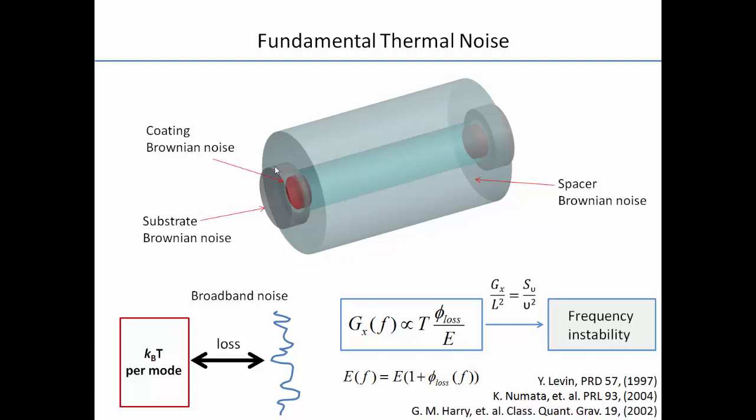The Brownian noise can be written as the power spectral density of the displacement, related to temperature, and the loss angle — which is the imaginary part of the complex modulus. This displacement becomes frequency instability scaled by the cavity length. To reduce thermal noise, we can lower the loss angle, use a longer cavity length, or cool the cavity — the colder the better. That's really why we built a 40 centimeter cavity, but you can't extend the cavity length indefinitely because longer cavities suffer from increased vibration noise.